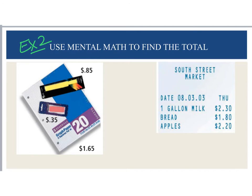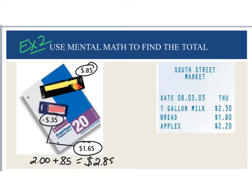For example 2, it says use mental math to find the totals. So for this one, with a notebook here, notice I have 35 cents, 85 cents, and $1.65. Well, me personally, I would add the 35 cents to the $1.65, because I know that will give me $2, and then I'm going to add my 85 cents, so the total for all of this will be $2.85. Likewise, when I come over here and I look at this receipt, I'm looking at the ending numbers, and if I add the 80 cents and the 20 cents, that's going to round up to the next dollar. So by adding $1.80 to $2.20, this here is going to give me $4, and if I add that to the $2.30, I end up with $6.30.